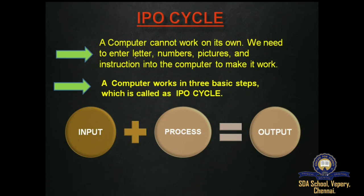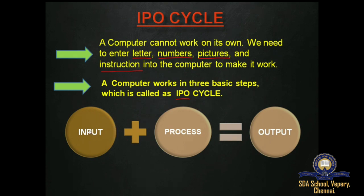Our next topic is the IPO cycle. A computer cannot work on its own; we need to enter letters, numbers, pictures and instructions into the computer to make it work. A computer works in three basic steps which is called the IPO cycle. We have to give the input, the computer will process it, and display the results as output.